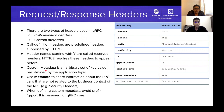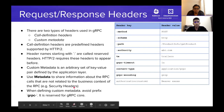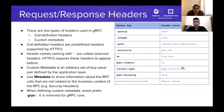Custom metadata is arbitrary key-value pairs defined at the application level, normally used to share information about the gRPC call such as authentication headers. Some headers are prefixed with 'grpc-', such as grpc-timeout and grpc-encoding, which are defined in the gRPC core implementation. When defining custom metadata, avoid the 'grpc-' prefix, and ensure the content-type is prefixed with 'application/grpc'.